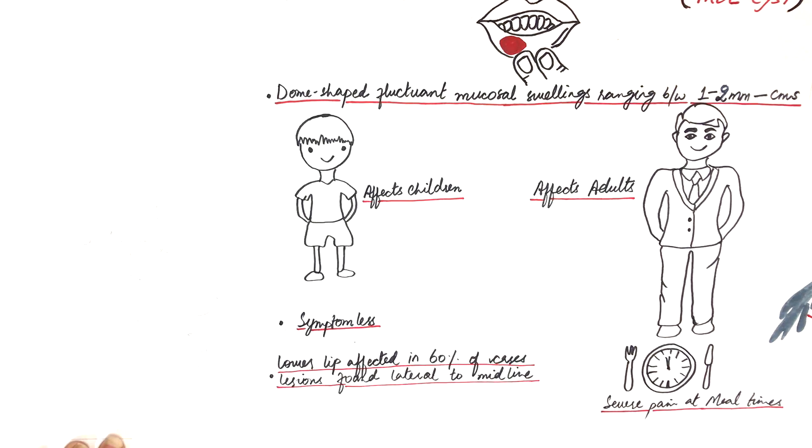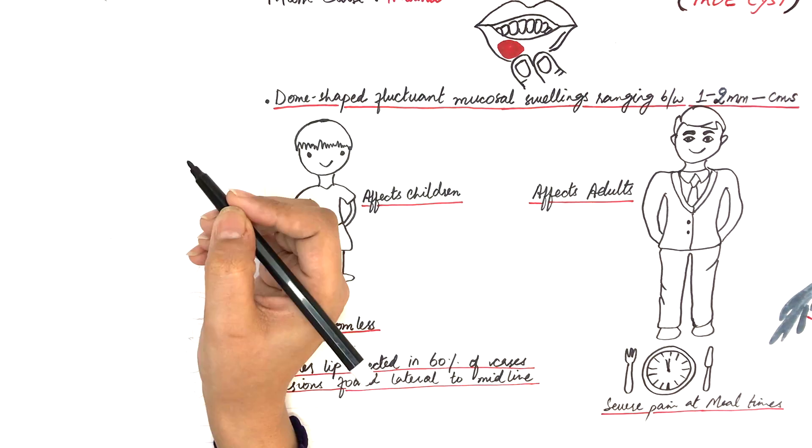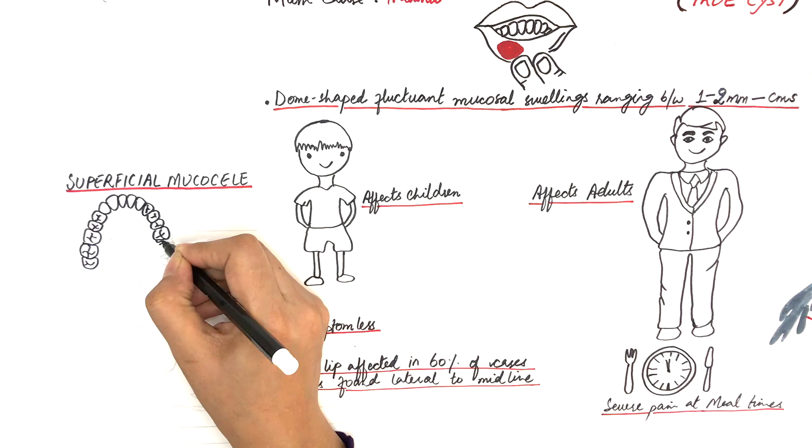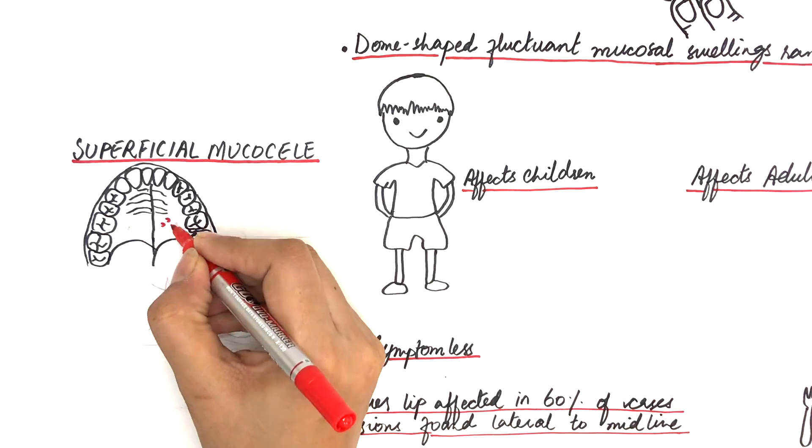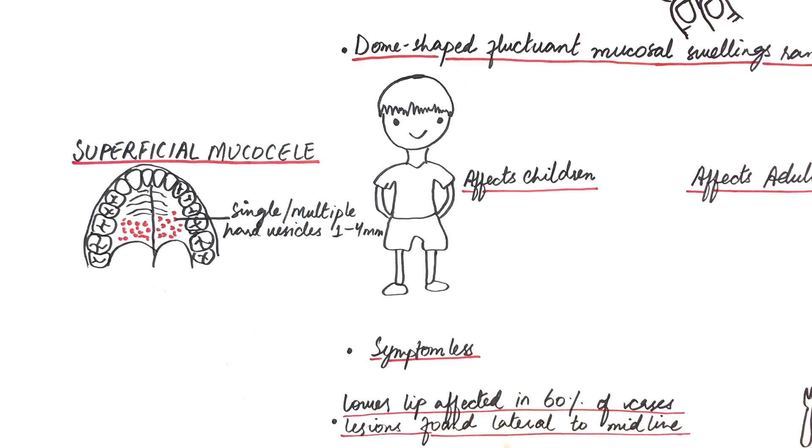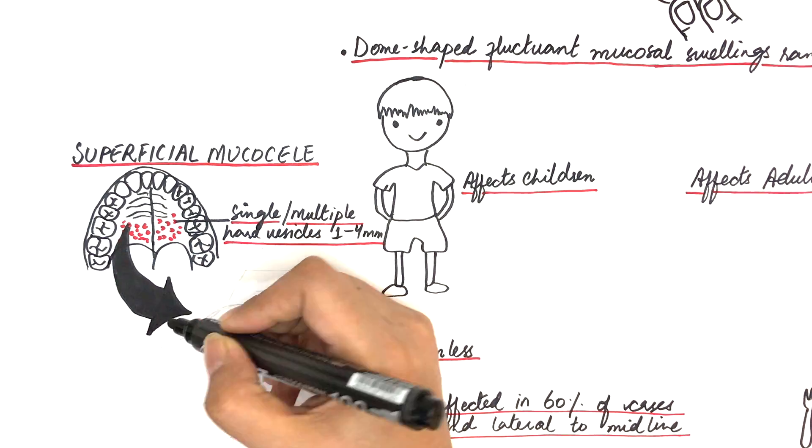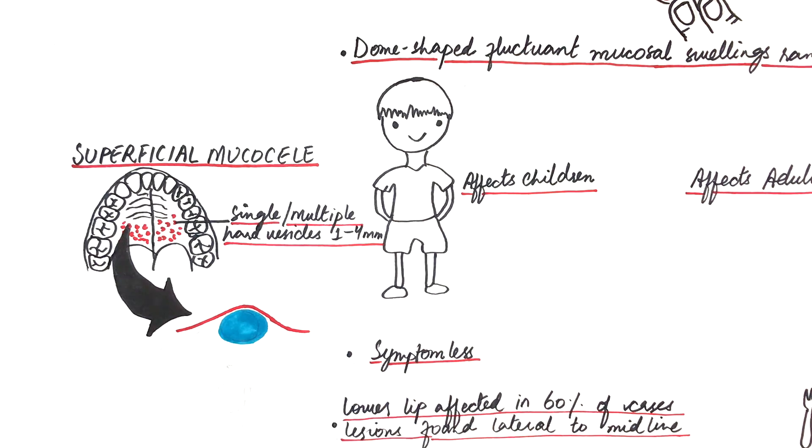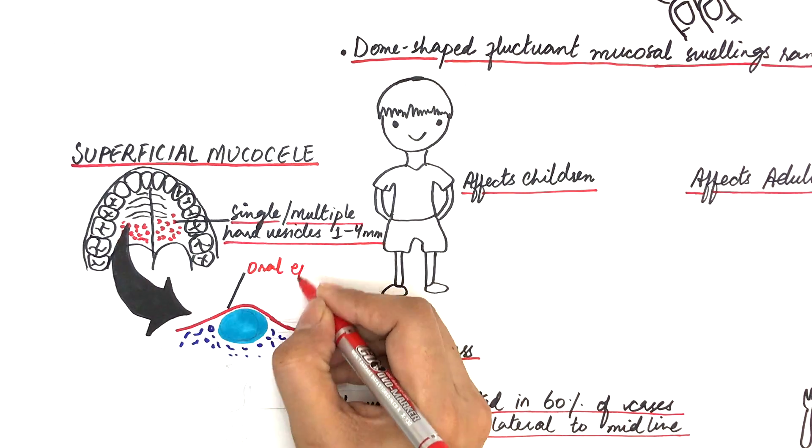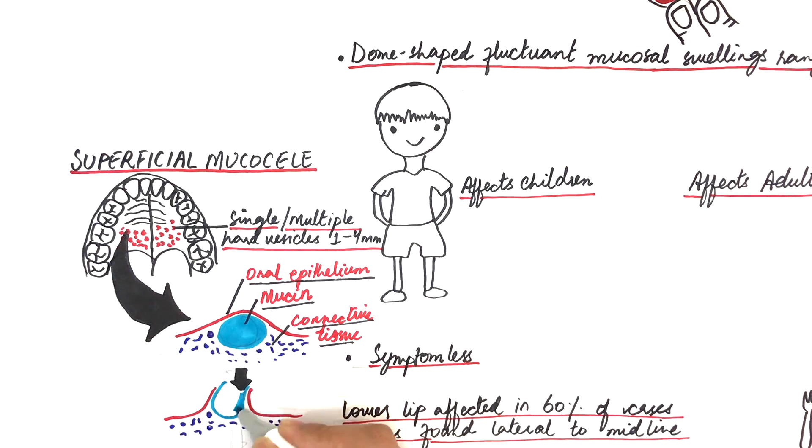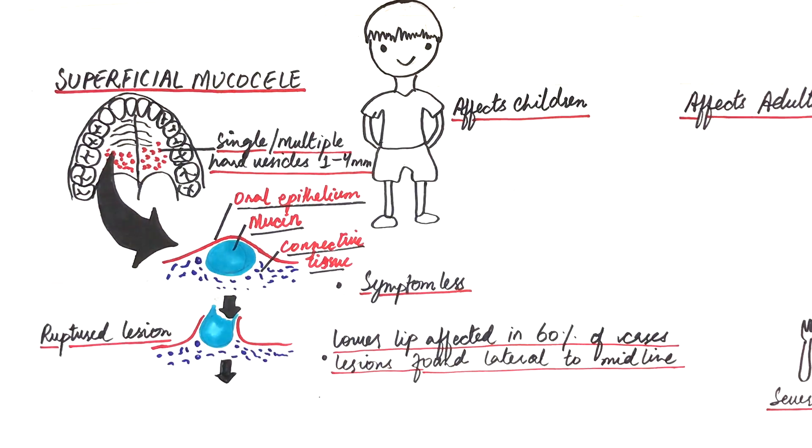A well-known characteristic variant of the extravasation type is the superficial mucocele. These superficial mucoceles, as their name suggests, present as single or multiple hard vesicles measuring between 1 to 4 mm in diameter. It can develop in some rare sites like buccal mucosa and retromolar pad region. Their vesicular appearance is created by superficial nature of the mucous spillage, which causes a separation of the epithelium from the underlying connective tissue. Within a matter of days, the lesion bursts on its own, leaving behind shallow and painful ulcers that heal by themselves.